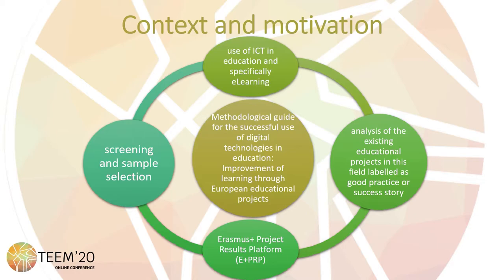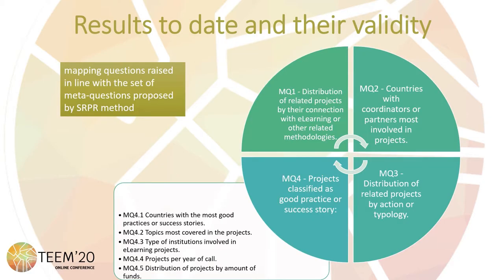At this stage of the research, the screening and sample selection of projects is being carried out. In order to make the screening process, these mapping questions have been raised, taking into account the type of study and the set of meta-questions proposed by the guidelines for systematic research project reviews — a method described by Alicia Garcia Holgado, Samuel Marcos Pablos, and Francisco José Garcia Peñalbo. We are going to analyze the results obtained.